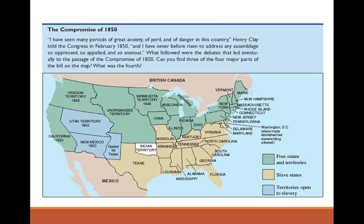This compromise really pleases nobody. The Southerners are angry that the slave trade is abolished; the Northerners are angry that slaveholding is still allowed in our nation's capital and feel that's a blight on the nation. The fourth and final piece of the Compromise of 1850: the Utah and New Mexico territories are open to something called popular sovereignty, meaning the people within those territories or once they become states will get to decide. That doesn't become an issue here because those territories are dry and arid and not really suitable for large-scale settlement at this time.